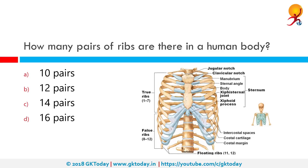How many pairs of ribs are there in a human body? There are 24 ribs or 12 pairs, out of which only 14 or 7 pairs are true ribs. Pairs 1 to 7 are labeled as true ribs while the rest are labeled as false ribs or floating ribs. The correct answer is 12 pairs.